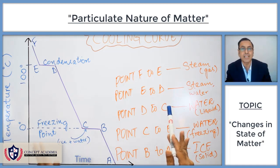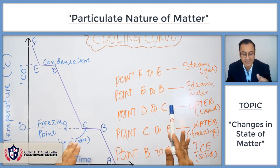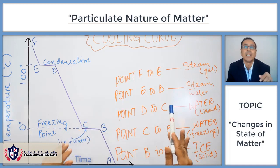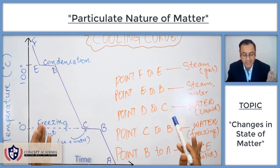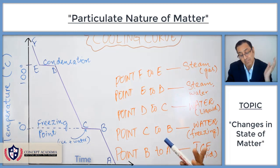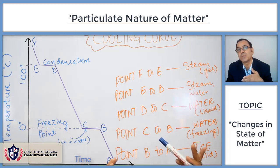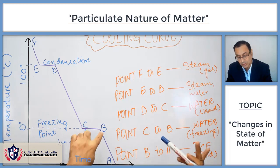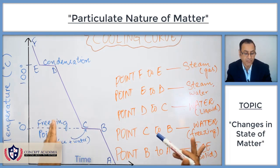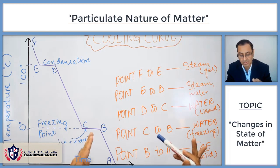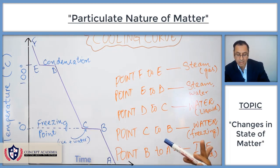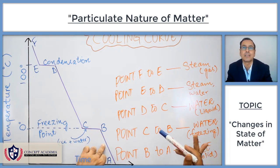From point C to B, ice and water coexist. And again, you can observe that between point C and B, the temperature remains the same, as the liquid water is converting into ice. When one state of matter converts into another, the temperature remains the same. To point B, all of the liquid water has changed into ice. And from B to A, the temperature is falling down and it is all ice — solid state.